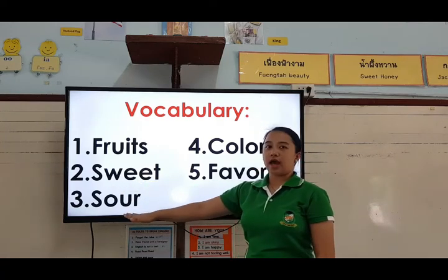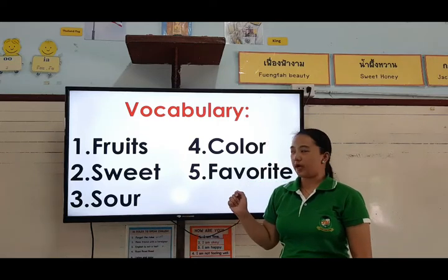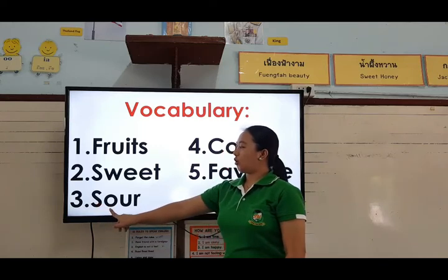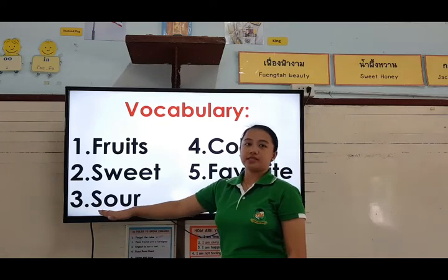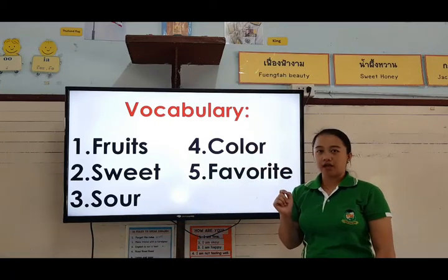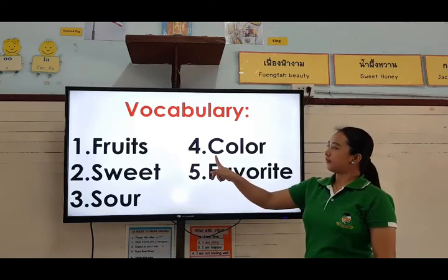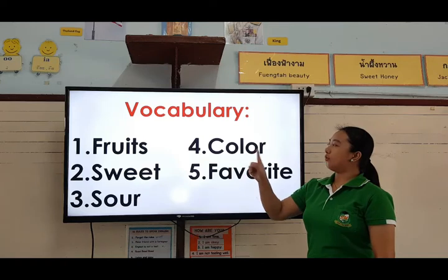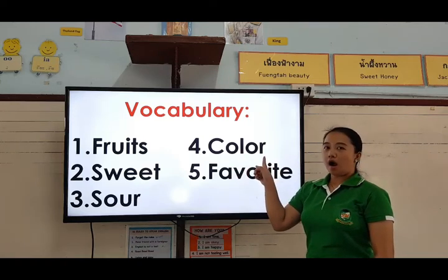Number three, we have sour. Sour. Let's spell: S-O-U-R. Sour. The fourth one, we have color. Color. Let's spell: C-O-L-O-R.